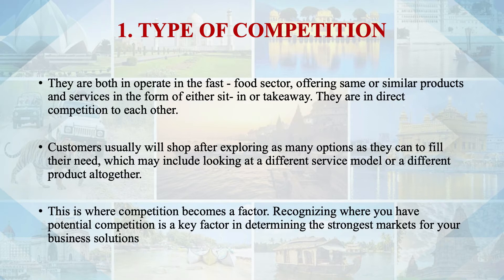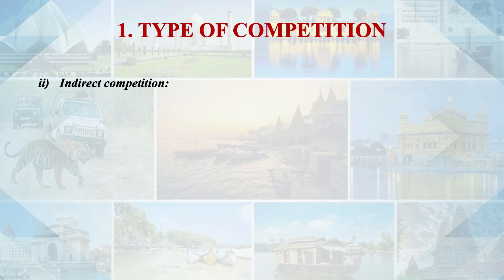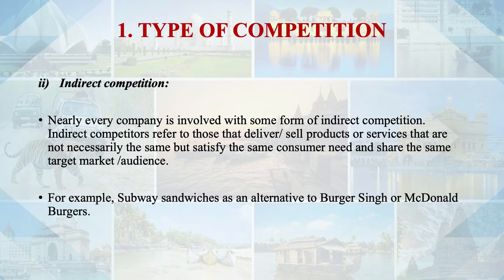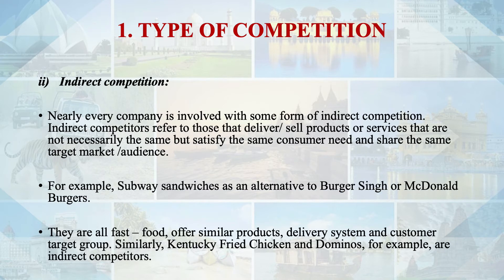Nearly every company is involved with some form of indirect competition. Indirect competitors deliver or sell products or services that are not necessarily the same, but satisfy the same consumer need and share the same target market. For example, Subway sandwiches can be used as an alternative to Burger King or McDonald's burgers — both are fast food, both offer similar kinds of products, use the same kind of delivery system, and almost always have the same customer target group. Similarly, KFC and Domino's are indirect competitors: while both are considered fast food, KFC specializes in fried chicken while Domino's is known for pizza.